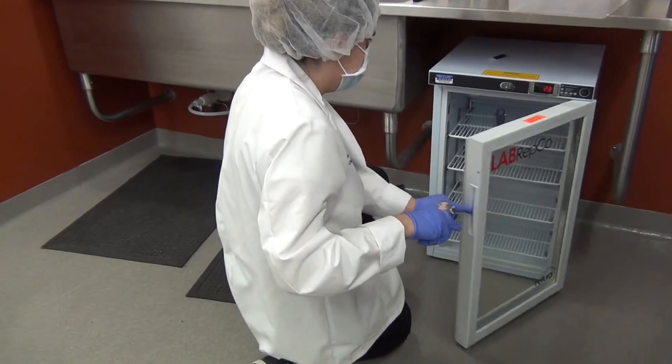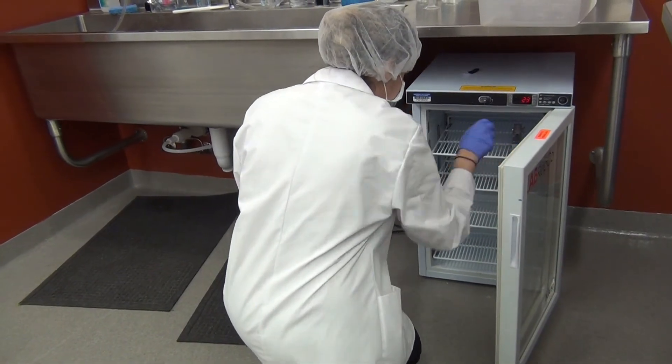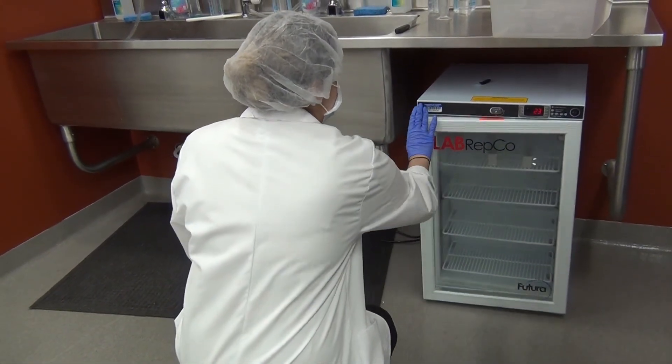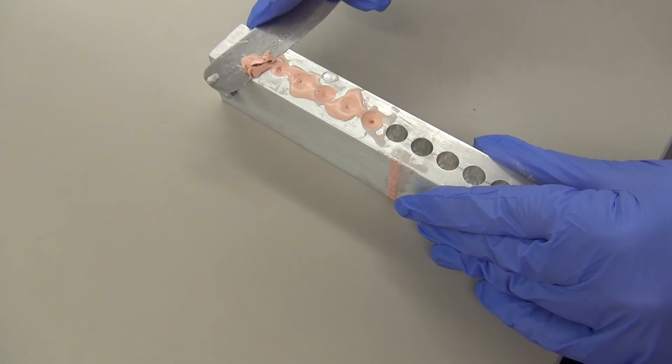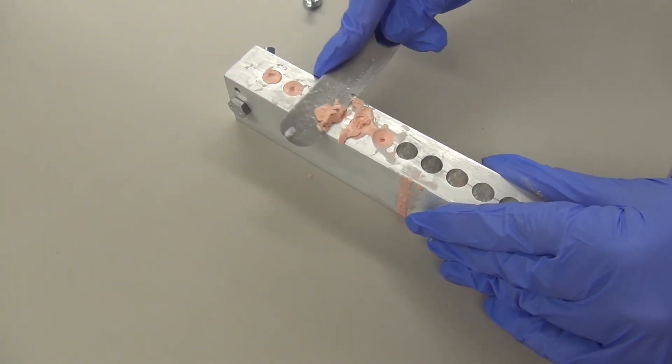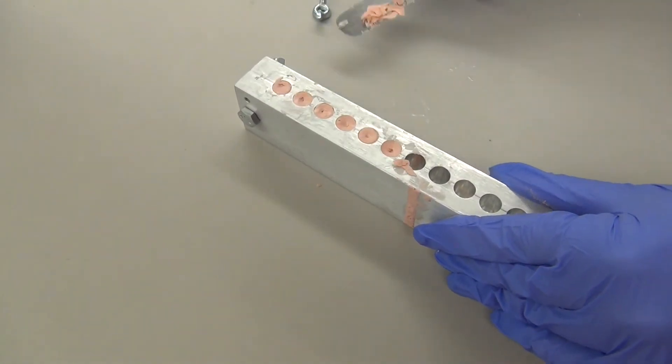Place in the refrigerator and wait until the suppositories harden. Once complete, you can go ahead and remove the mold from the refrigerator and scrape the excess off the top.